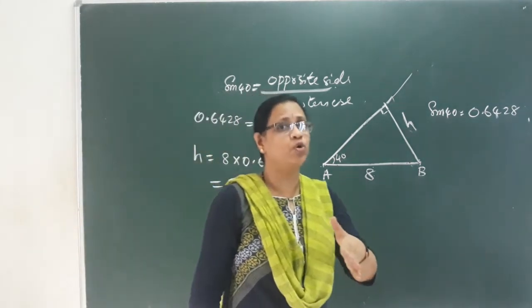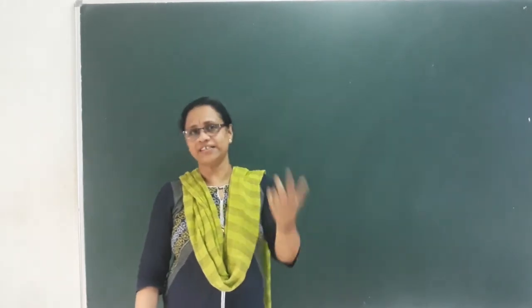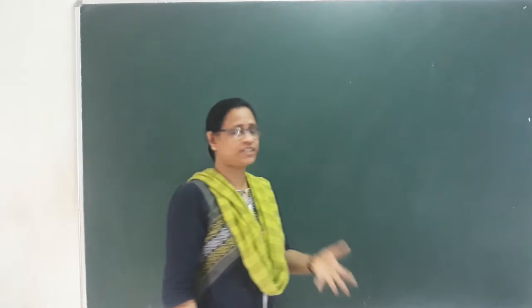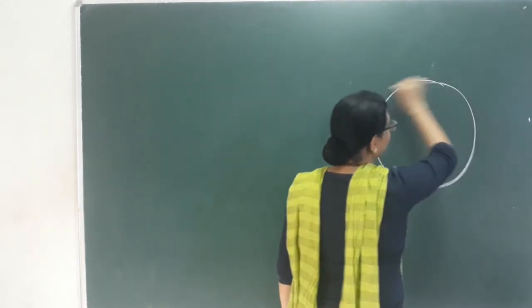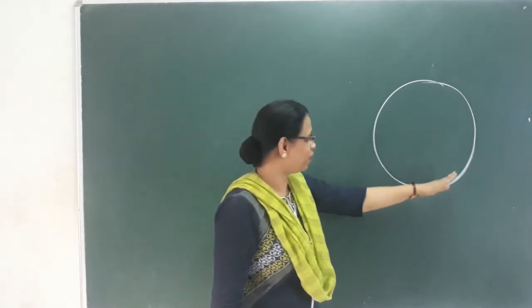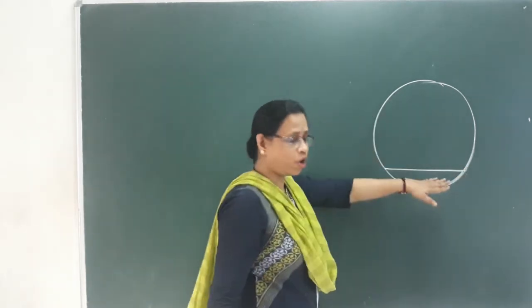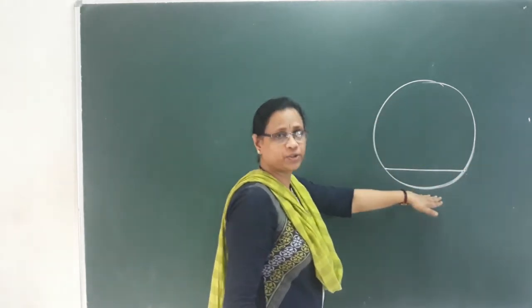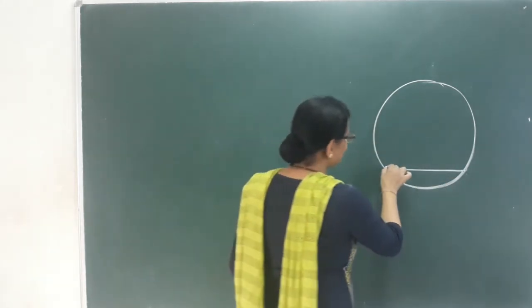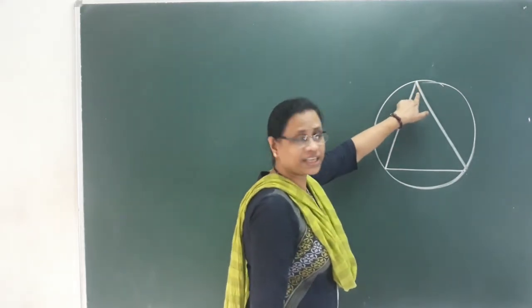Next topic will be continued: triangles and circles are related. We learn a circle. If we learn a circle, then we learn a chord. This chord and circle have two parts — a major arc and a minor arc.